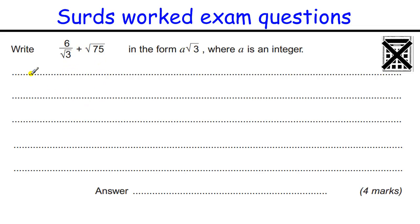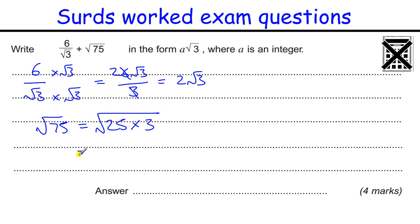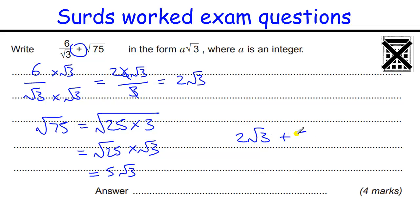Another similar question: 6 over root 3. We need to get rid of the root 3 on the bottom. Multiply top and bottom by root 3: we get 6 root 3 over root 3 times root 3, which is 3. Cancel those — 3 goes into 6 twice, so that's 2 root 3. Square root of 75: 25 goes into 75 three times, so that's root 25 times root 3, which is 5 root 3. Adding them: 2 root 3 plus 5 root 3 is 7 root 3.